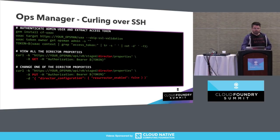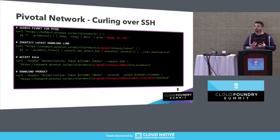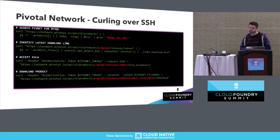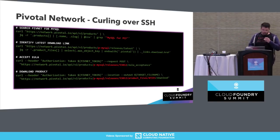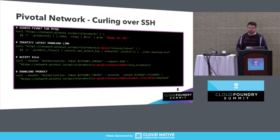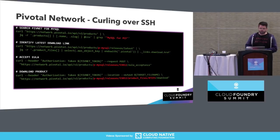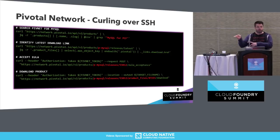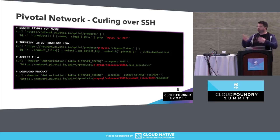So that was us looking at the Ops Manager API. We also need API control over Pivotal Network — it's a similar story. In all these examples we're just using basic curl calls. We want to simulate a typical workflow: the first line searches for MySQL, the second looks for the latest download available, then you need to accept the EULA — at which point you need your pivnet API token, which you can get from pivnet — and finally you download the product. The download is going to take some time, but at least it can now come to your jump box and not to the browser.